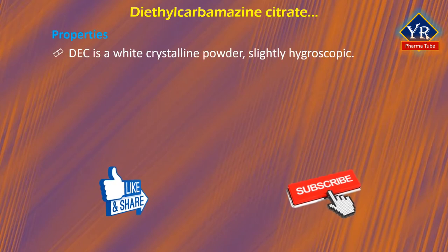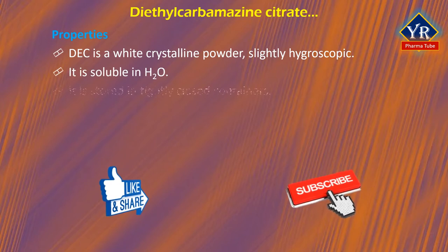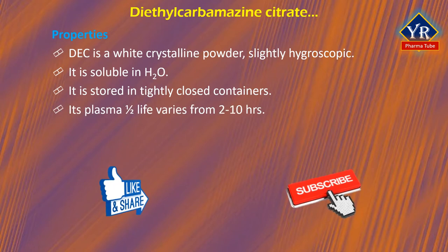Diethylcarbamazine citrate is a white crystalline powder, slightly hygroscopic. It is very soluble in water and stored in tightly closed containers. The plasma half-life varies from 2 to 10 hours depending upon urinary pH.